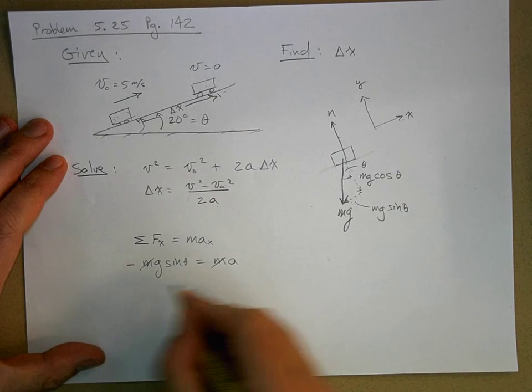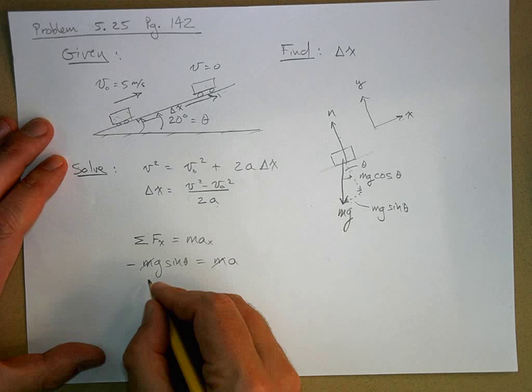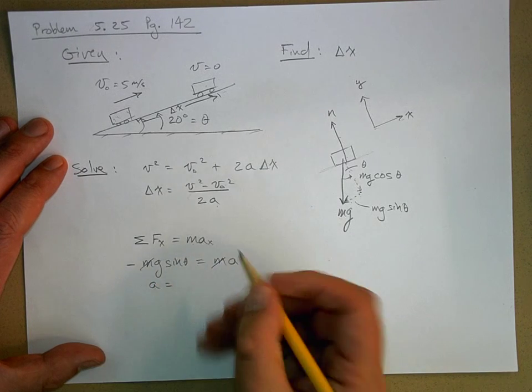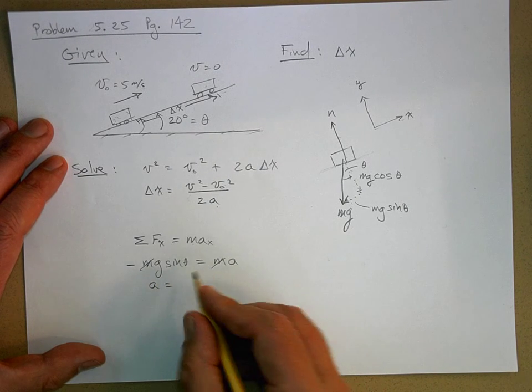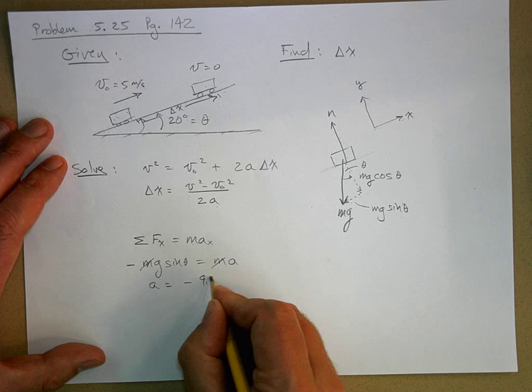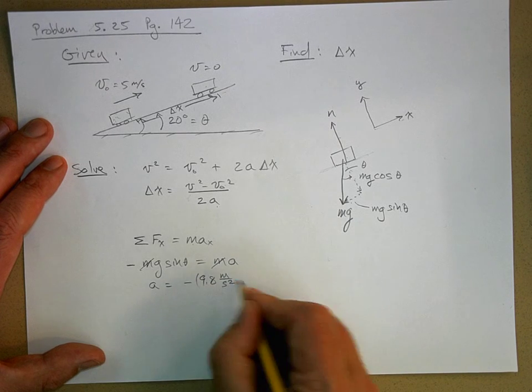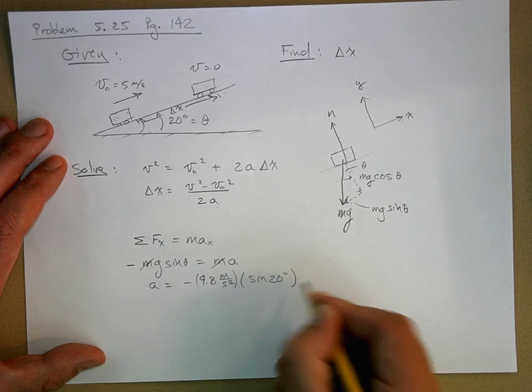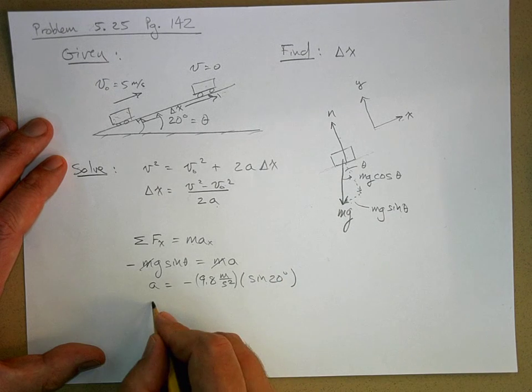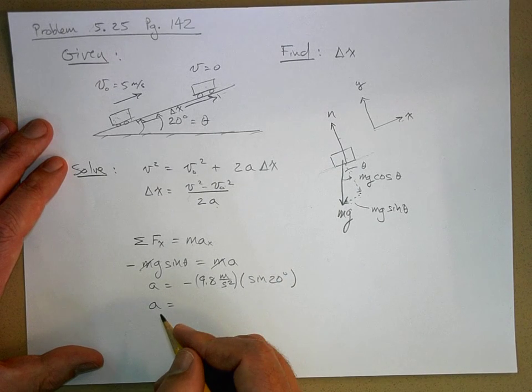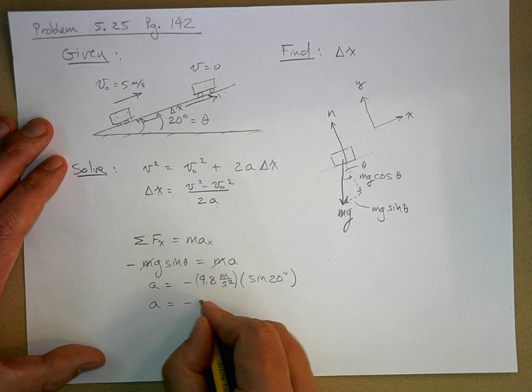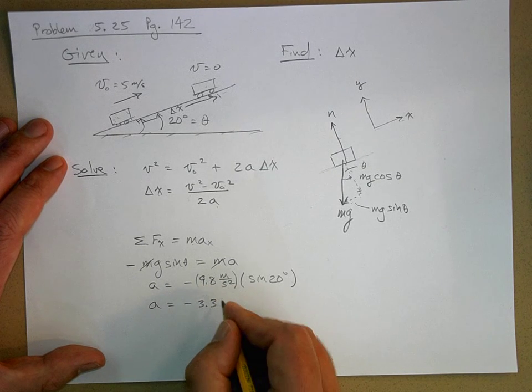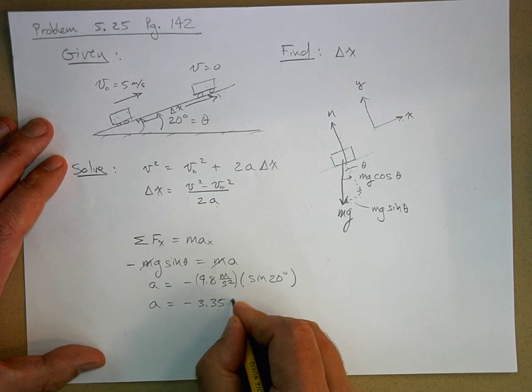And so now the acceleration, we can now solve for the acceleration, equals negative 9.8 meters per second squared times the sine of 20 degrees. Could somebody do that for me who has a calculator? Negative 3.35 meters per second squared.